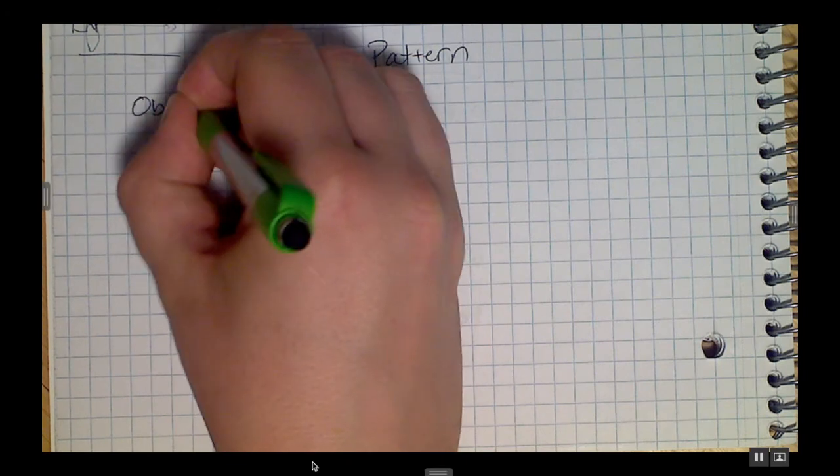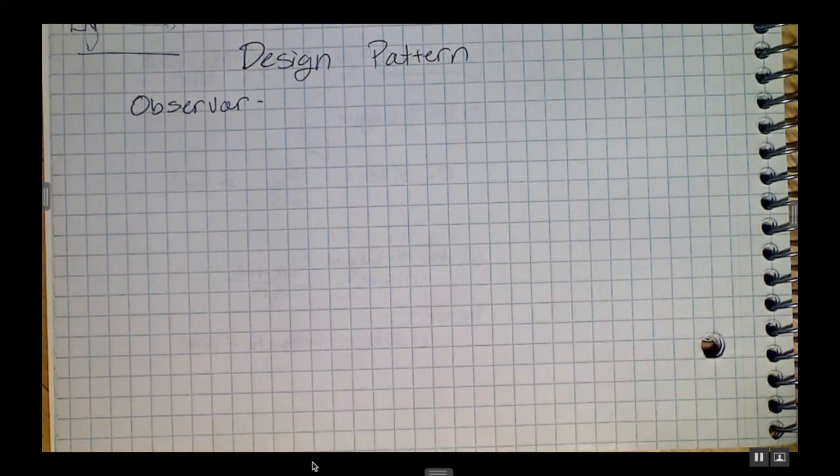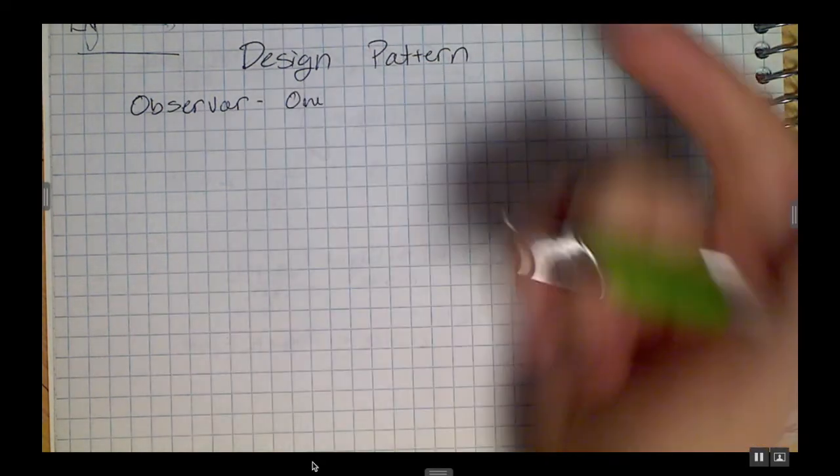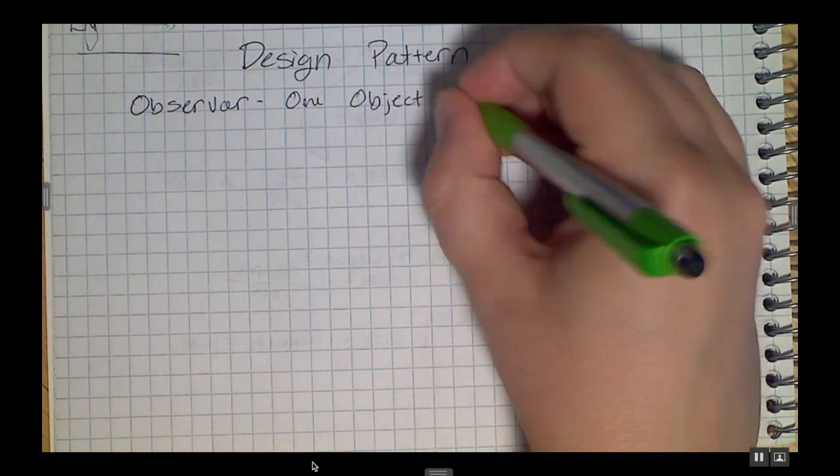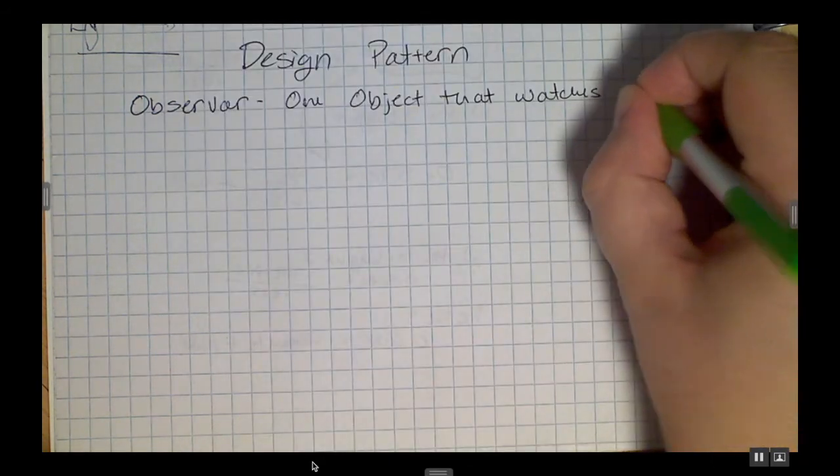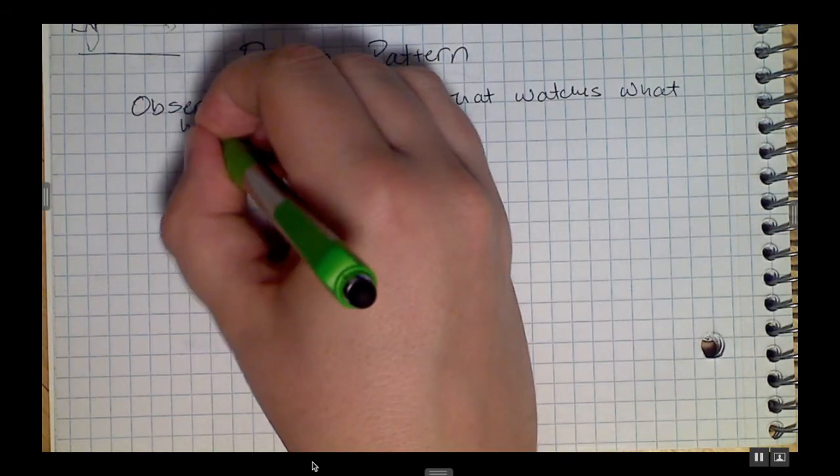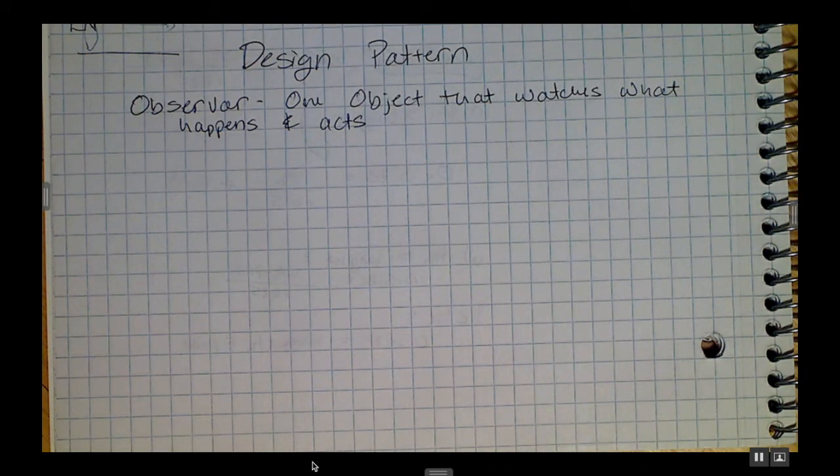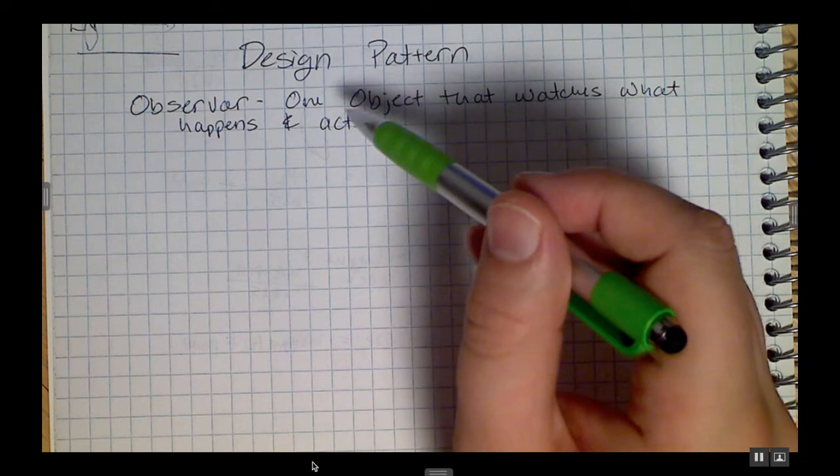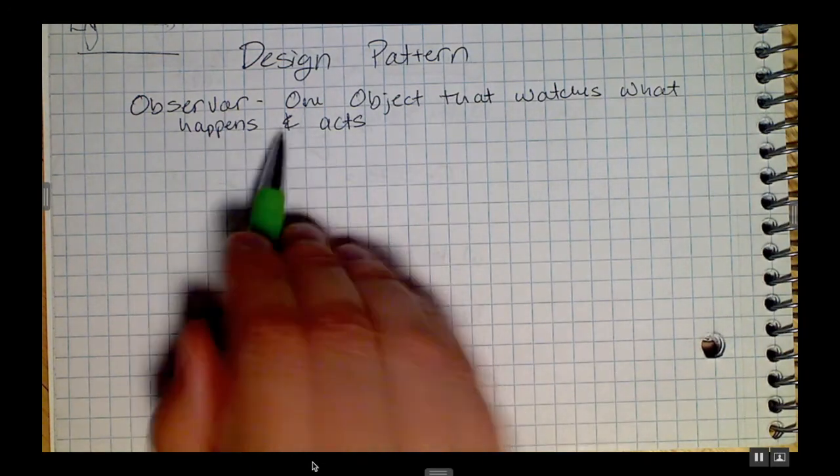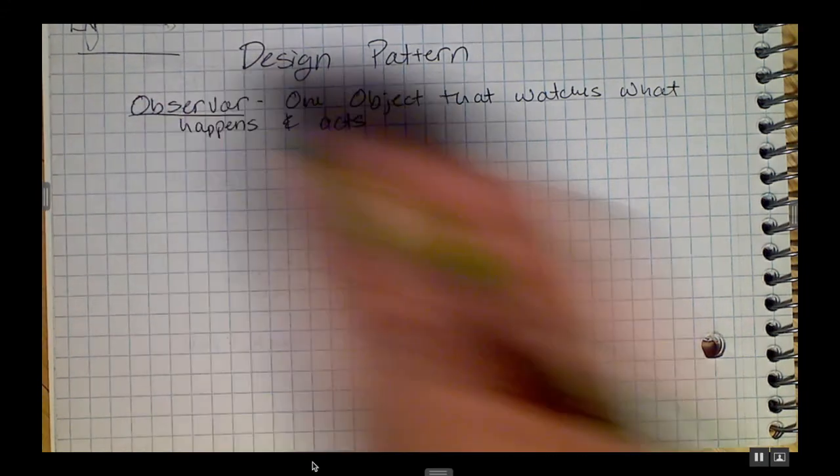The first one I want to talk about is called the observer pattern. The observer pattern is a pattern where you have one object, or depending on the situation you could have more than one object, but you have an object in the scene that watches what's going on and based on what happens it will perform certain actions. So it watches what happens and acts. For example, you could have an object that's your score manager and that score manager watches what your player does. If your player picks up a coin, it adds something to the score. If your player gets hurt, it subtracts from the score.